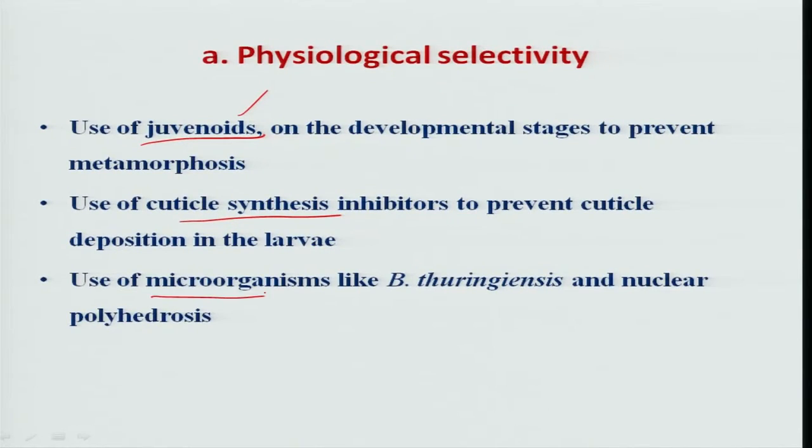Lastly, many microbial organisms — in particular bacteria and viruses — are very specific to insect cells, and viruses are very specific to the nucleus itself. So they can be used as microbial insecticides under specific IPM situations.